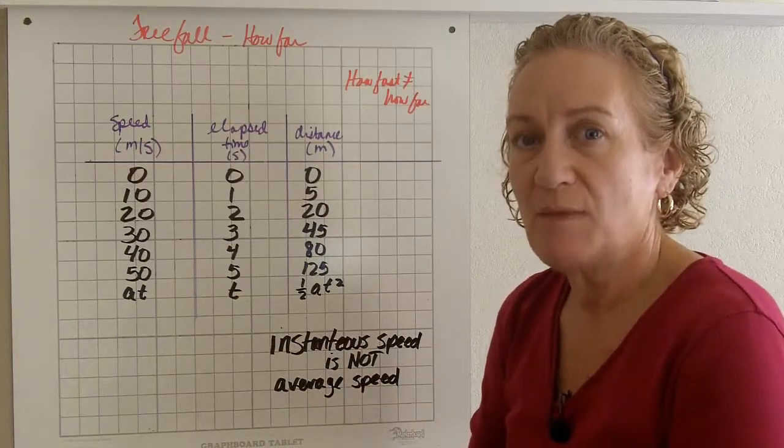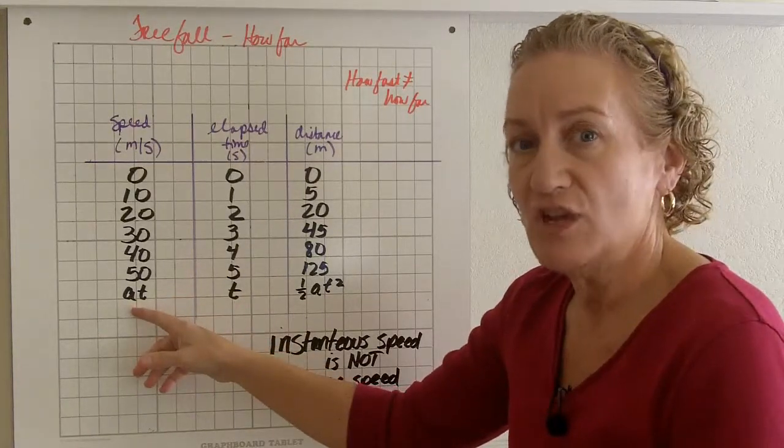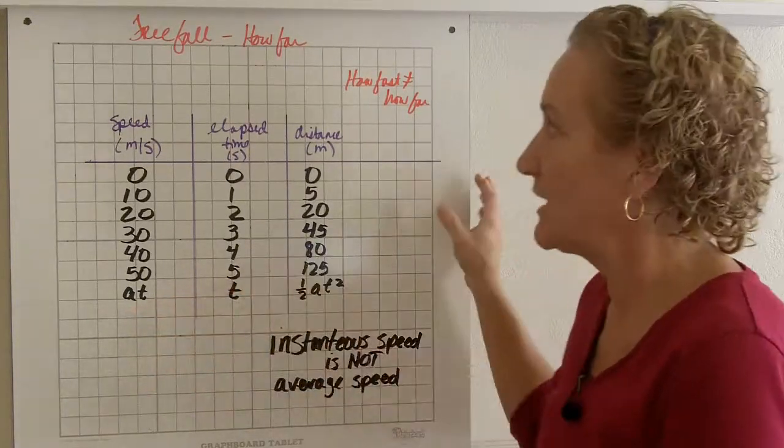And we're going to round that to 10 to make the math a little bit easier. So acceleration in this case could be g, which is 10 meters per second squared.